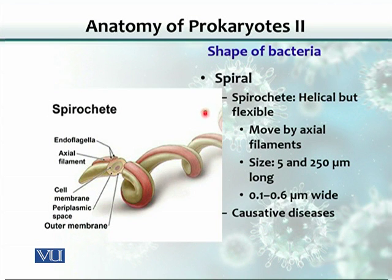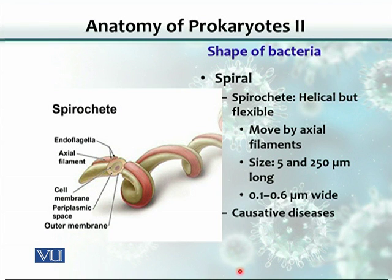The third player in the spiral group are spirochetes. These are helical — they have bends in the structure — but overall the bacterium is flexible. For mobility, all spiral bacteria have flagella, but spirochetes have evolved a special modification of the flagella called an axial filament. We will study this structure in detail shortly.